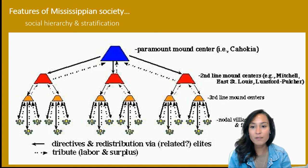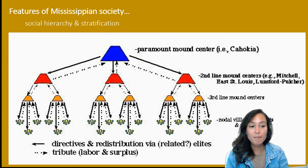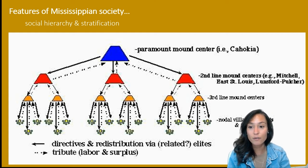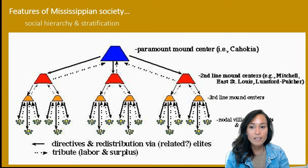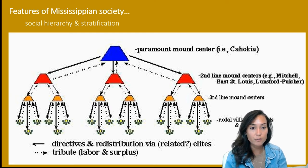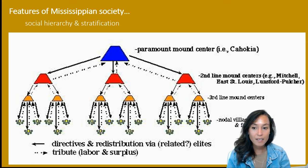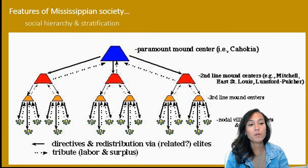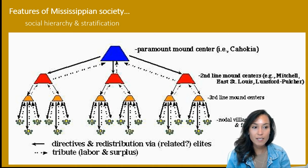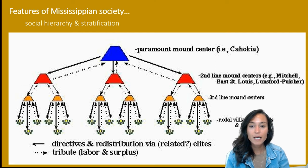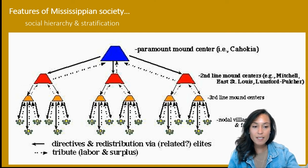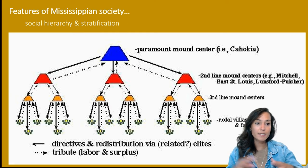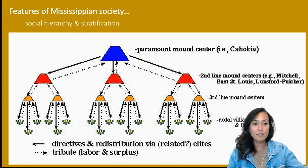Around 1000 AD, previously dispersed populations in the Midwest and Southeast began to congregate at Cahokia, forming a tightly integrated society with a three-tiered hierarchical system. The capital was seated at Cahokia, with several smaller political and administrative centers to the east and west, followed by rural homesteads in the northern part of the region. Everything was organized at the center, with distribution of goods and resources moving down this hierarchy.